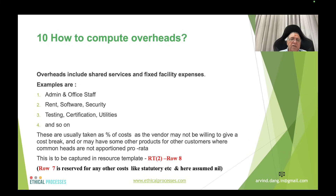Overheads — like admin and office staff, rent, software, security, testing, certification, and utilities — are usually taken as a percentage of cost, as the vendor may not provide a detailed cost breakup or may share overheads across other customer products not apportioned on a pro-rata basis. This is captured in row 8. Row 7 is reserved for any other statutory or miscellaneous costs not mentioned elsewhere.